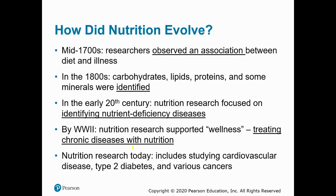Let's take a brief look at the history of the science of nutrition. We can go back to the mid-1700s, when researchers, scientists, and medical professionals started to notice an association between what people ate and certain illnesses. By the 1800s, we started to chemically identify the molecules we call carbohydrates, lipids, and proteins, and we were also beginning to identify some minerals. By the early 20th century, nutrition research really started to emerge as a field, and we started to look at diseases based strictly on deficiencies of certain nutrients.